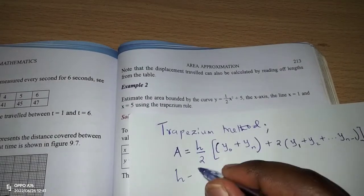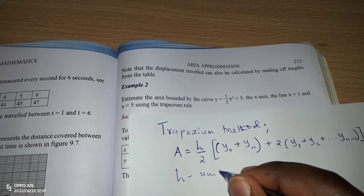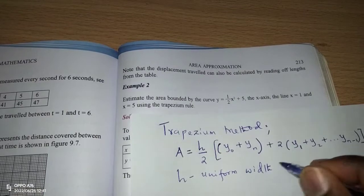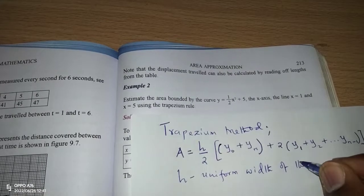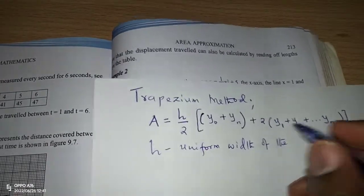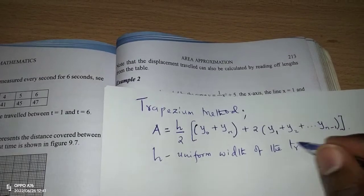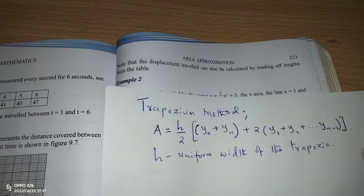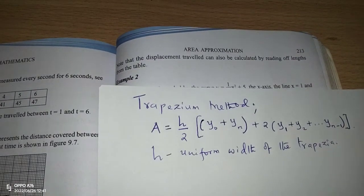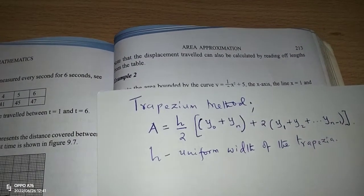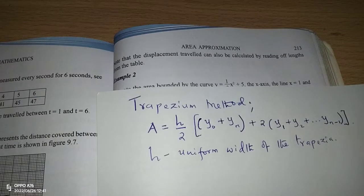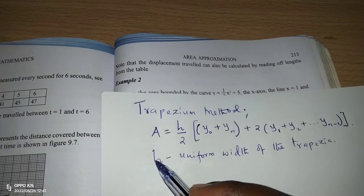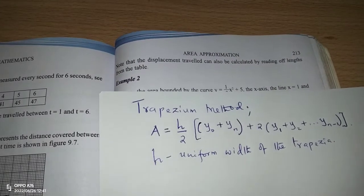In this formula, h is the uniform length of the trapezia. In case you take area under a curve and you break it into several trapezia, then you find all the trapezia have a common height or common length, and we give it h.